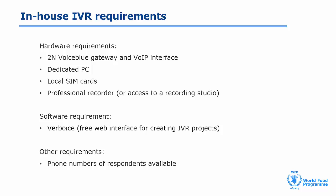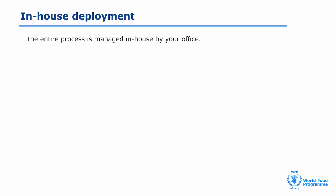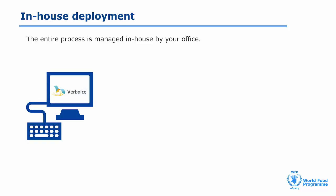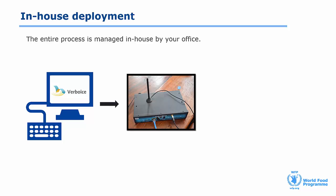So, how do these devices work together in the IVR system? Let's look first at how the process is managed in-house. First of all, Verboice has to be installed on a local server and connected to the 2N VoiceBlue gateway. This is a modem that hosts the SIM cards used to make and receive the calls. You insert the SIM cards in the modem.